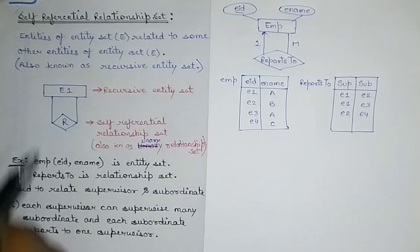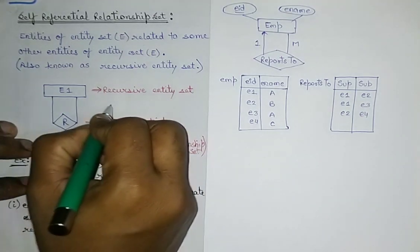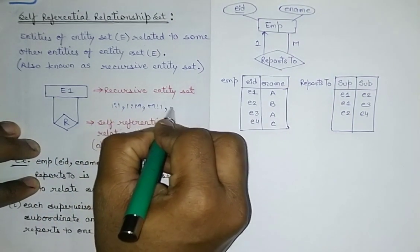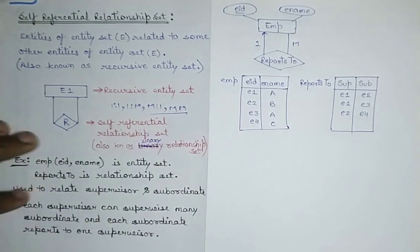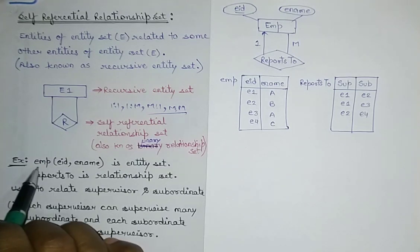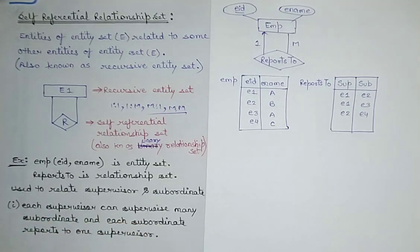In this self-referential relationship set, there will be four different kinds of mappings: one-to-one, one-to-many, many-to-one, and many-to-many. These four mappings can exist in a unary relationship set. I took an example where employee is an entity, employee ID and employee name are the two attributes, and 'reports to' is the relationship set used to relate the supervisor and subordinate.